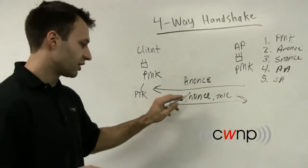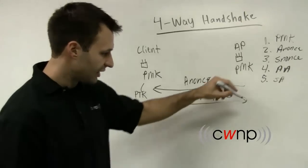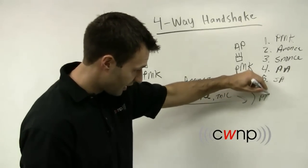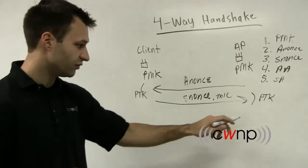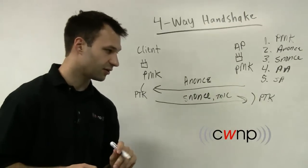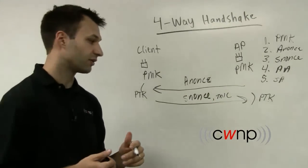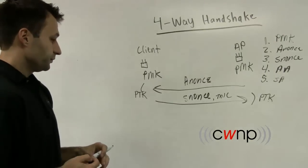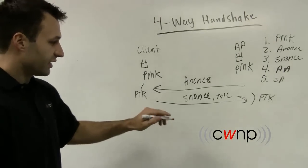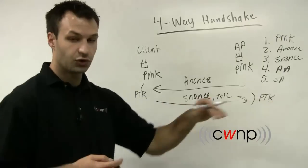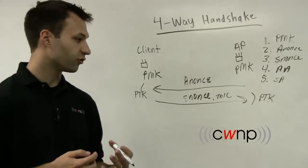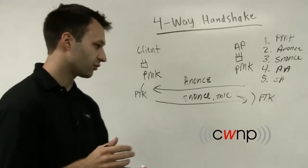So the access point receives this SNUNCE with protection, and it can now calculate the PTK as well. And it can validate, using that PTK, it can validate the MIC to make sure that it was never tampered with in transit. And then at this point, the PTK is used for unicast encryption. So from a source address to a single destination address.